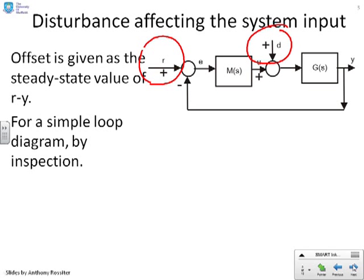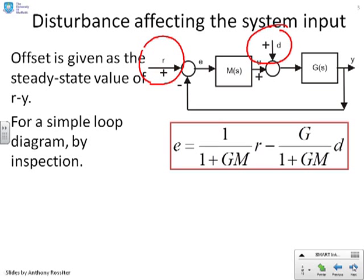Now, it's straightforward to show that the Laplace transform for E can be given as in this box here. So it has a dependence on R, 1 over 1 plus GM times R, and a dependence on D, minus alpha G over 1 plus GM times D. You can derive these using superposition, and this topic is covered in some other videos.